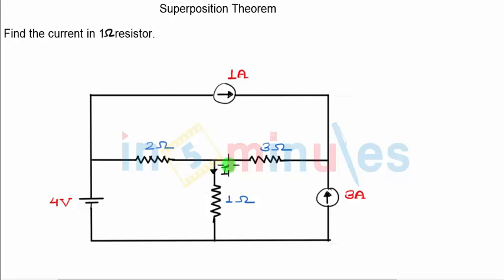Because we are discussing problems on superposition theorem, we are going to apply superposition theorem to find out the current through this one ohm resistance. We all know that in superposition theorem, we keep one source active at a time and find out the corresponding value of the variable. We do it for all the sources and at the end, we have to add all the individual values that we have obtained.